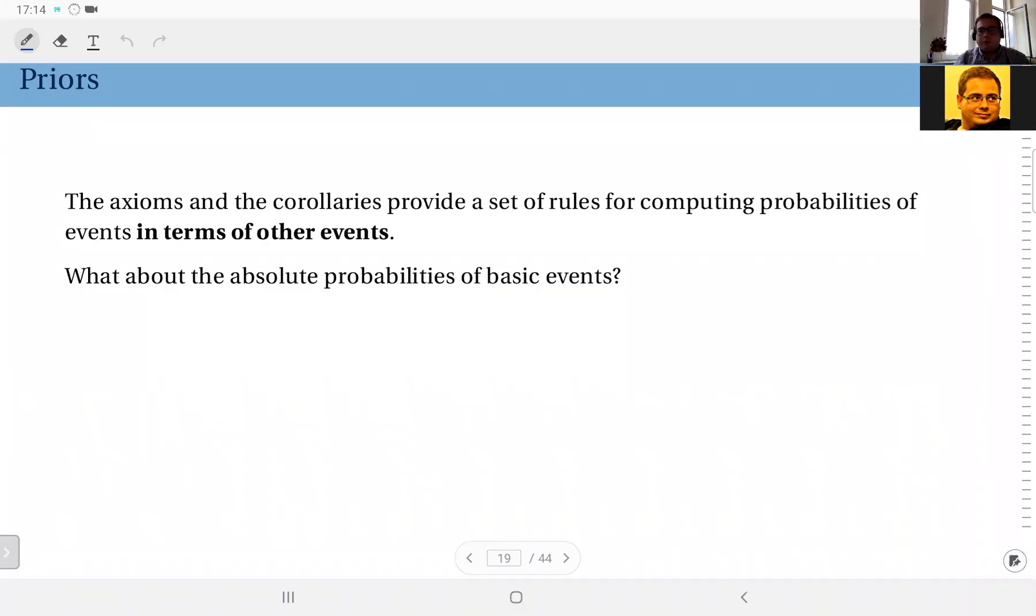Now, up to this point, we have talked about Kolmogorov's axioms and the corollaries that we can derive from them. Now, these axioms and the corollaries provide a set of rules for computing probabilities of events in terms of other events.